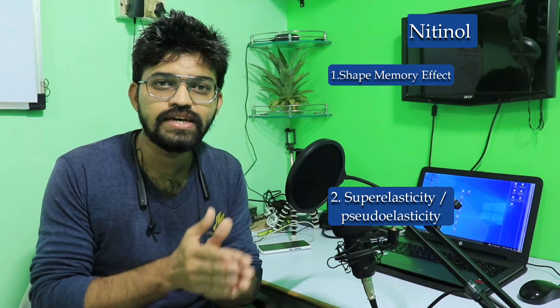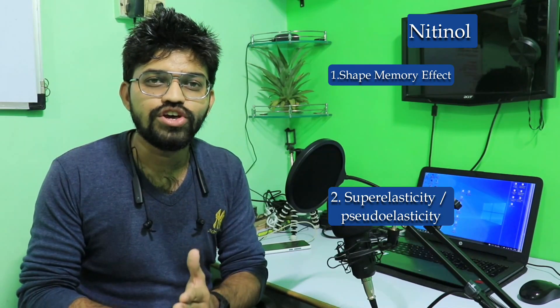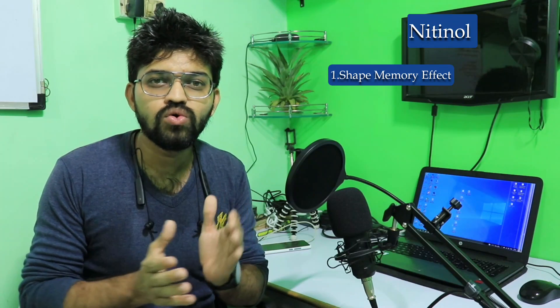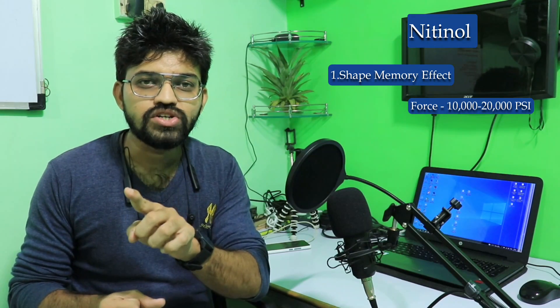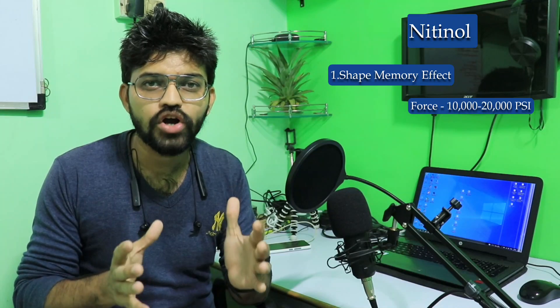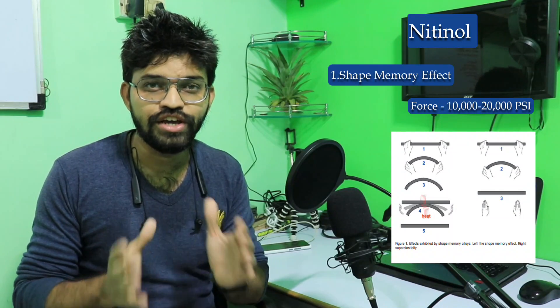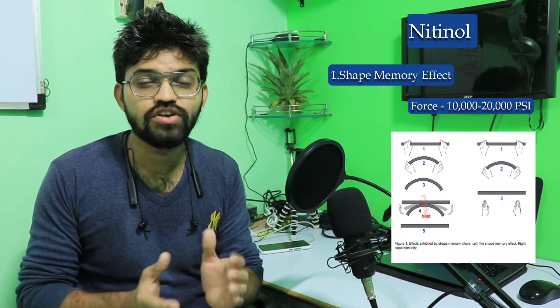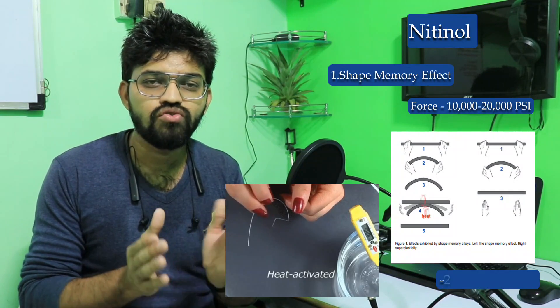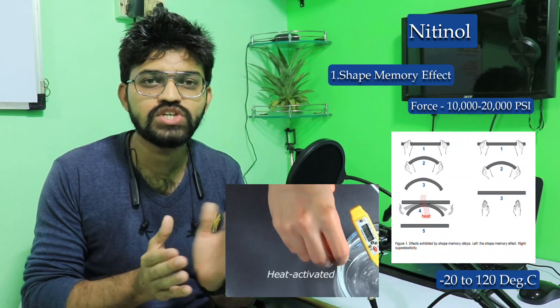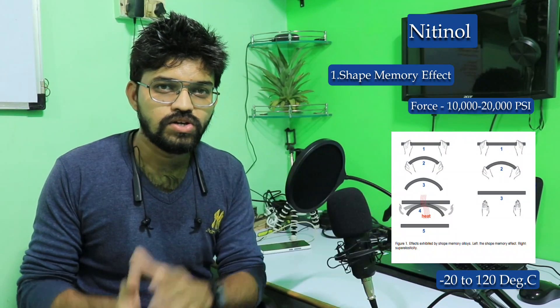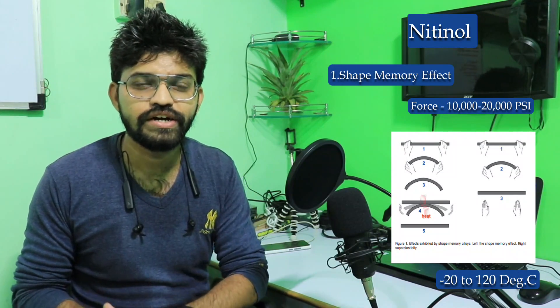This shape memory effect can be seen in Nitinol, but the force applied in the case of Nitinol is on the higher side — the force ranges from 10,000 to 20,000 psi. When this huge force is applied on a Nitinol wire it gets deformed, but after the application of heat it restores its previous shape. The temperature range for this heat varies from minus 20 to 120 degrees Celsius.